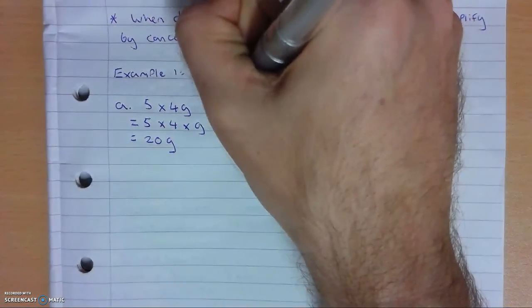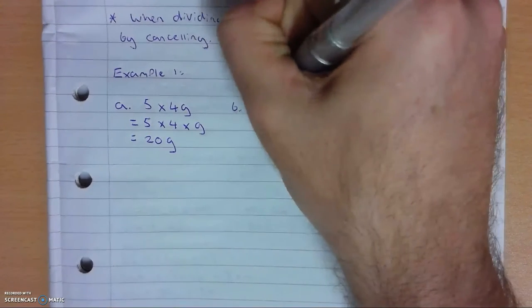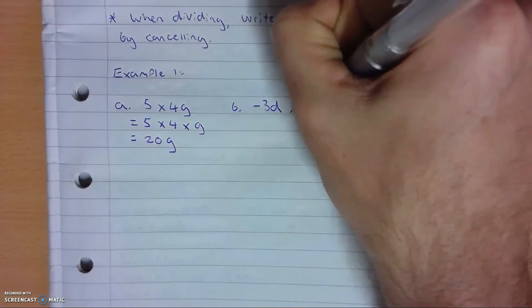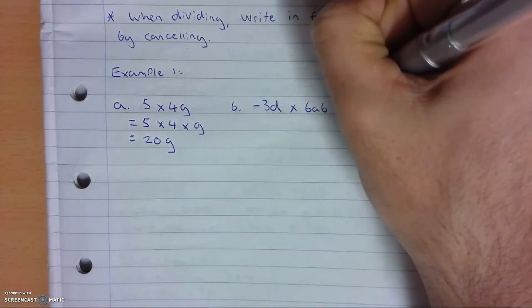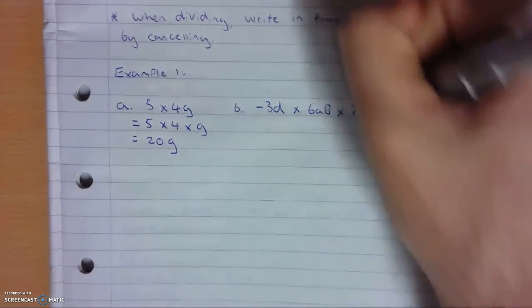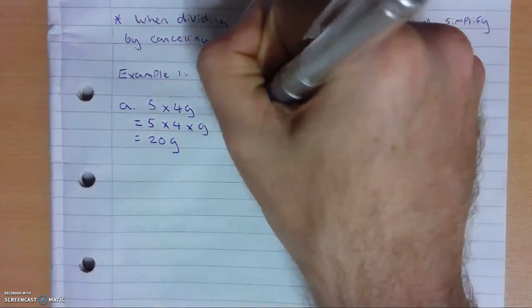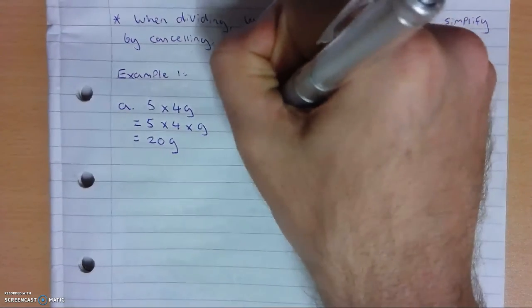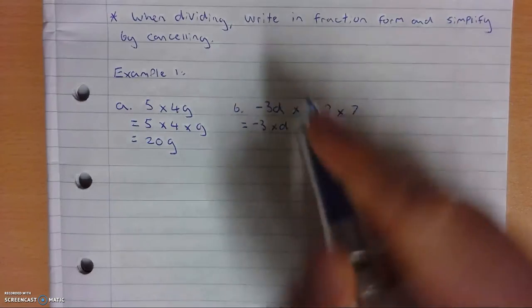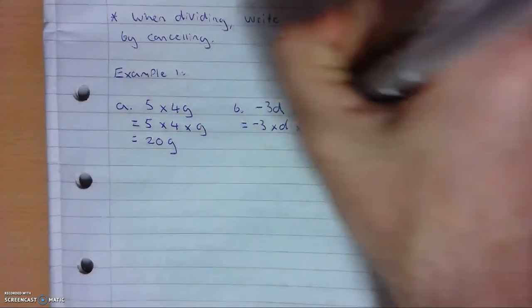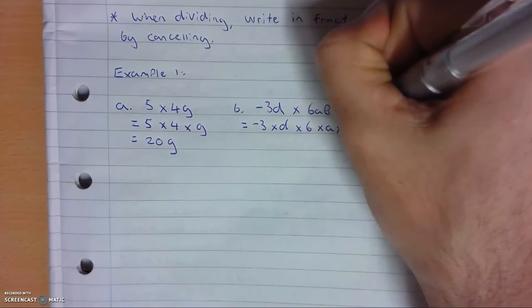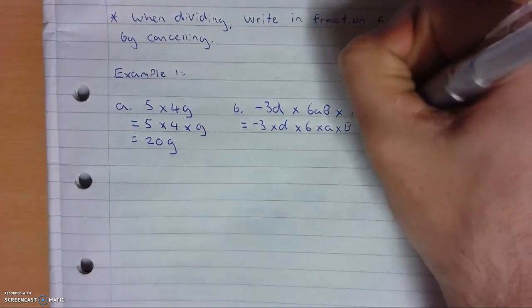So b, I'll do another one, negative 3d times 6ab times 7. So negative 3 times times d, added in my hidden multiplication symbol between those two numbers there, times 6, times a, times b, times 7.